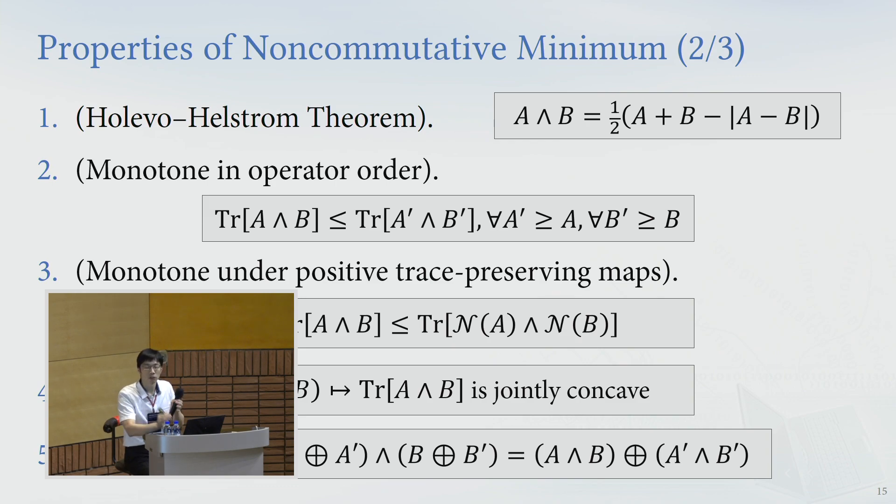So there are all known basic properties for the non-commutative minimum, and we use those properties in our proof.